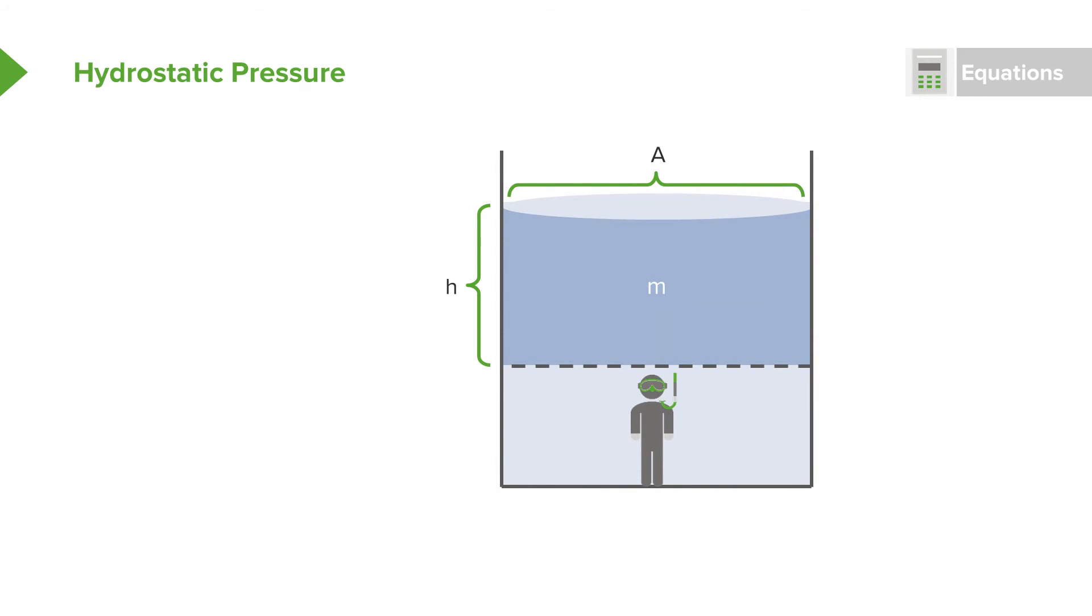we can tell how much volume this water has on top of us. We know the force of the water from gravity is its mass times its gravitational acceleration downwards. We can rewrite this expression by dividing by the area, collecting our terms, and then seeing that the pressure from this water that is on top of us right now is in fact equal to the density of the water times the gravitational acceleration times the height of the column of water that is ahead of us.